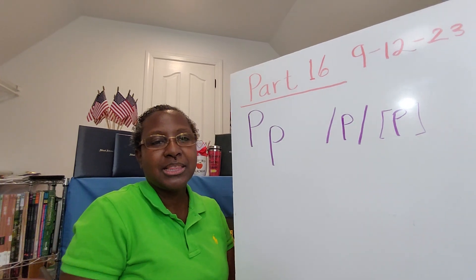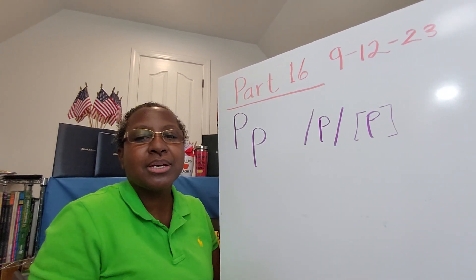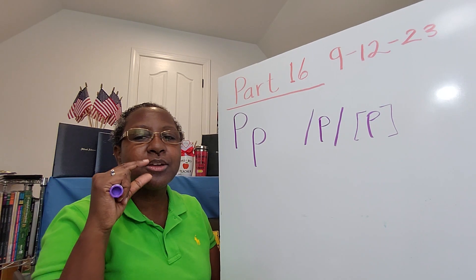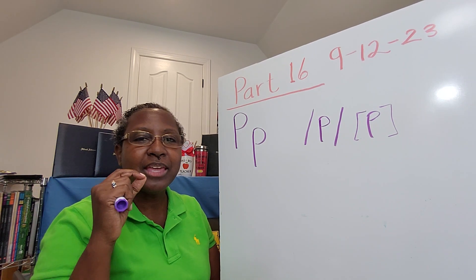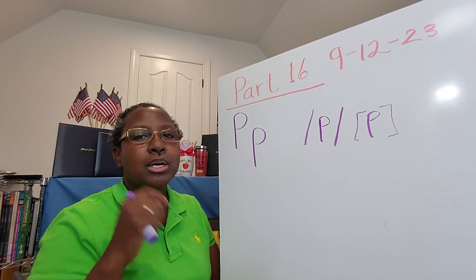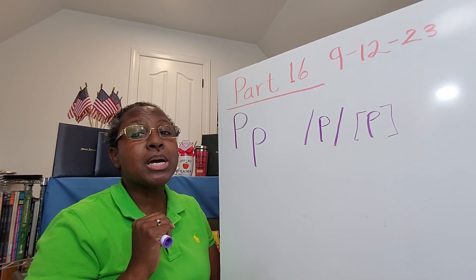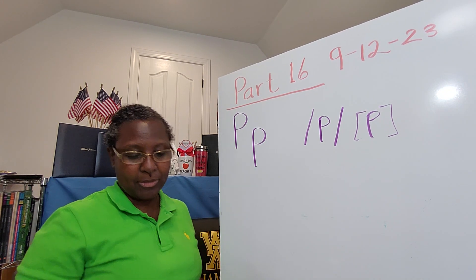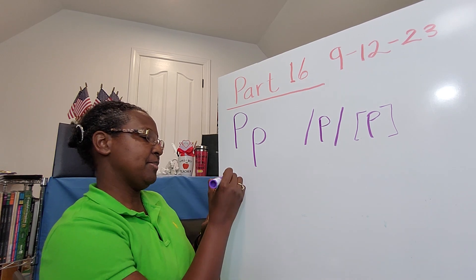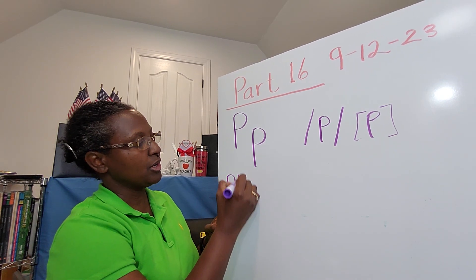The letter P says P. Notice how my lips come together, P, and then they quickly push a little bit of air through them, don't they? P. So here's an example of the letter P in a word.